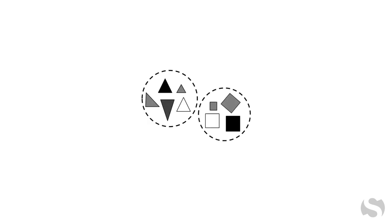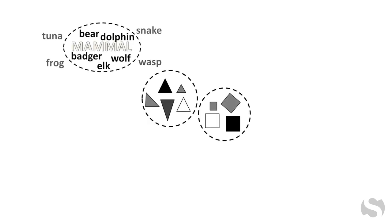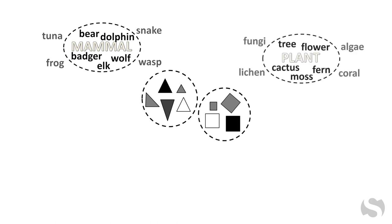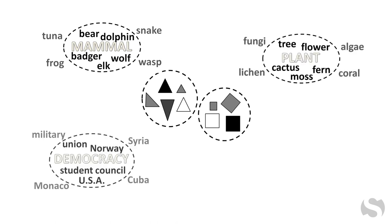One reason concepts are so important is that they spare long-term memory. By understanding the critical features, students can readily identify members of concepts like a shape as a triangle, an animal as a mammal, an organism as a plant, a nation as a democracy.